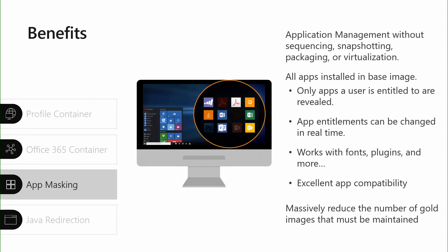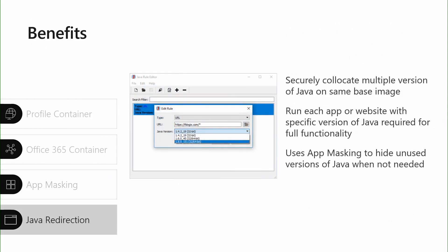Application masking is an approach that enables application management through installation of a base image. All you need to do is install the application, then you can reveal only the apps that you have entitled for a user, and this can be changed in real time. This will help simplify your app management through a consolidation of base or golden images that need to be maintained for different sets of users, ultimately simplifying what IT needs to manage on the back-end. And for Java redirection, you can hide unused versions of Java but provide them on one centralized base image, so you don't have to manage different golden images with different forms of Java and keep them separately updated.